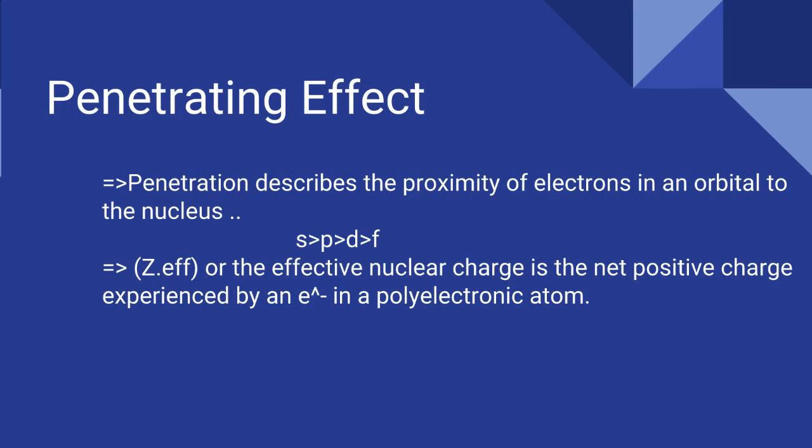Electrons which experience greater penetration experience less shielding, and therefore they experience a large effective nuclear charge, Z-effective, but they shield other electrons very effectively. Z-effective is the effective nuclear charge — the net positive charge experienced by an electron in a polyelectronic atom. A polyelectronic atom has a number of electrons. So effective nuclear charge is the real charge which is experienced by an electron.